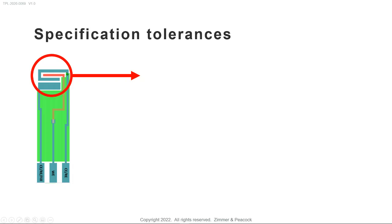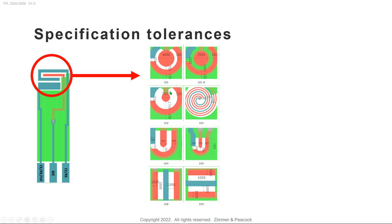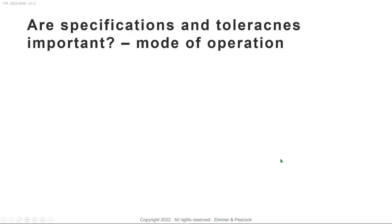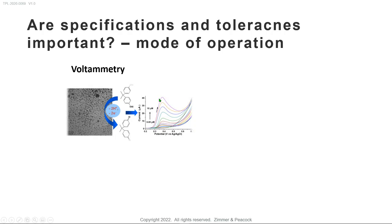In terms of tolerances, people can sometimes be very stringent. When we talk about tolerances, we're referring to the very important parts of a screen printed electrode, often around the working, counter, and reference electrodes. We understand that people have a desire to control these conditions. The first question is: are tolerances important? The answer is yes and no — it depends. A common mistake is to think about the screen printed electrode in isolation of the entire technology stack.